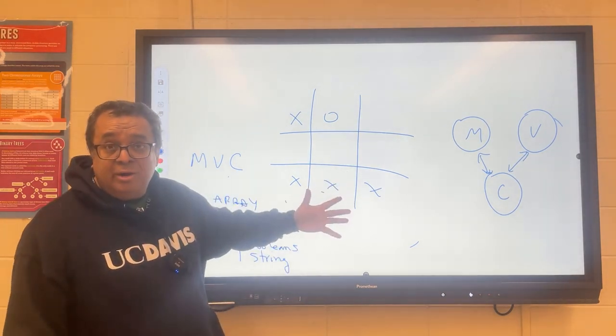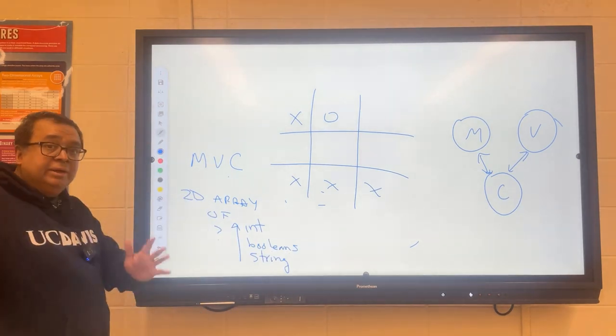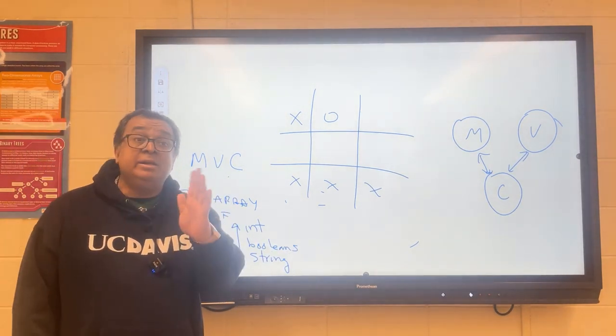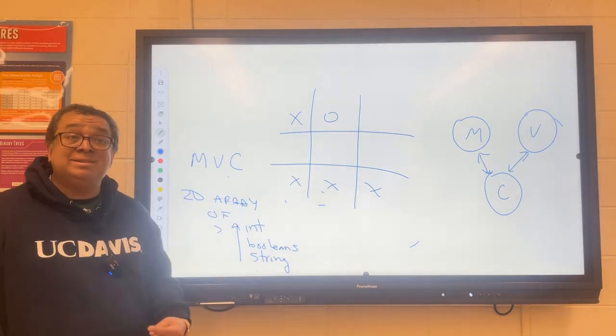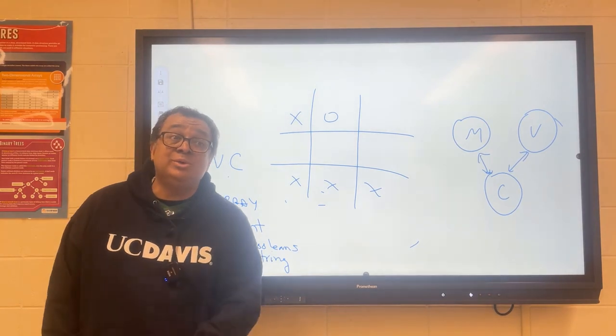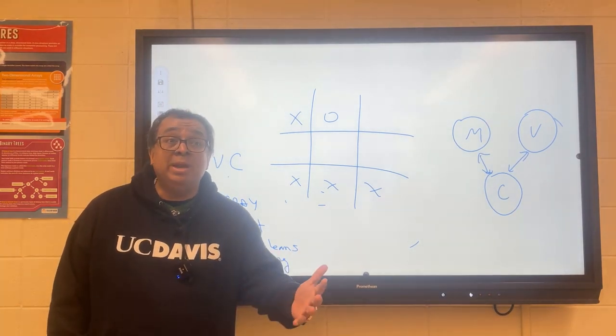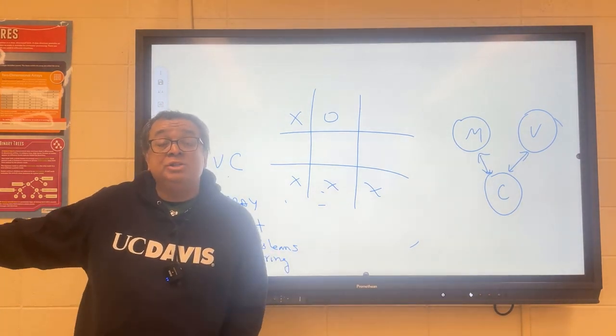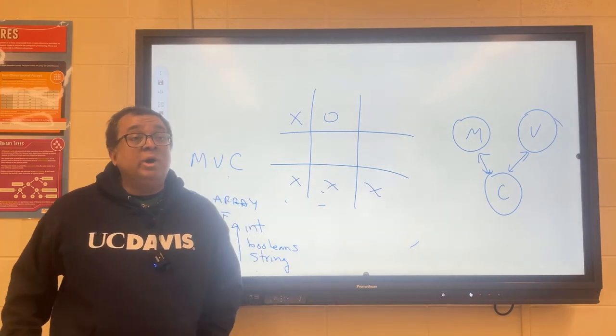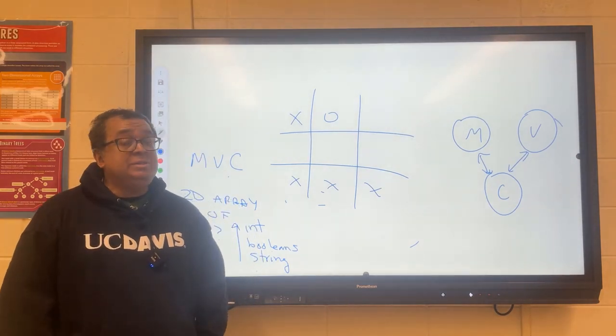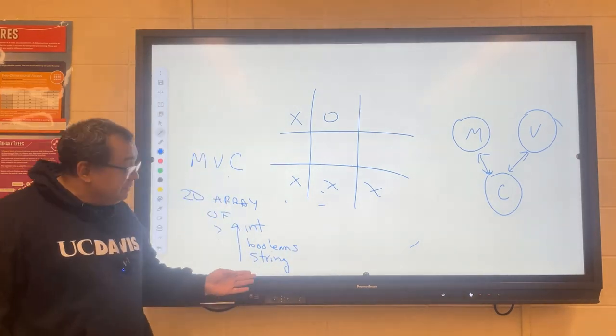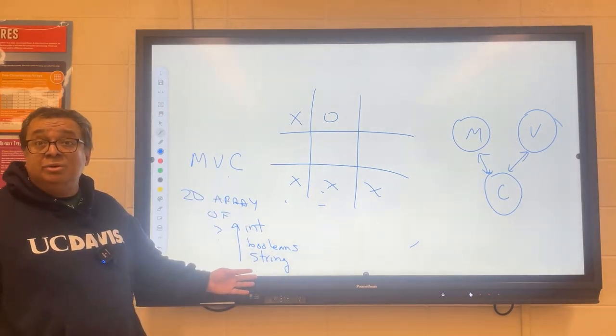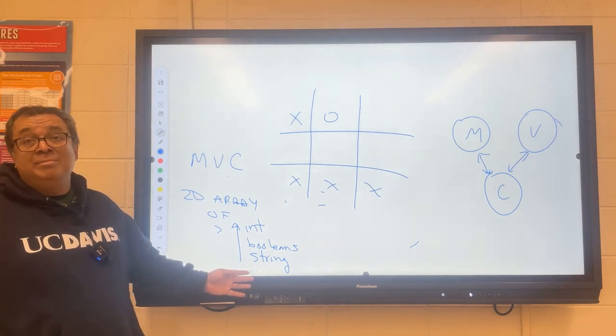Think about what would happen if you built this using strings. You're trying to figure out if this pattern happened. You're going to be like 'if this square dot equals X and this square dot equals X'—you're going to have hundreds of lines of code. Here is the main takeaway: just because you like strings doesn't mean the computer likes strings.